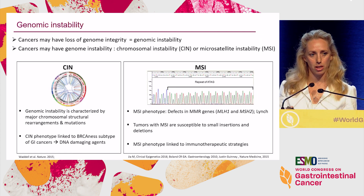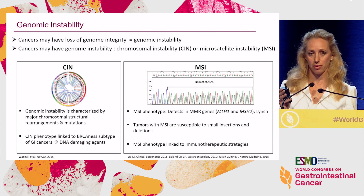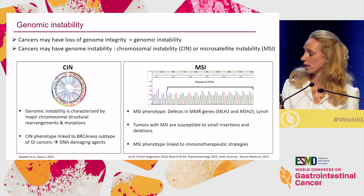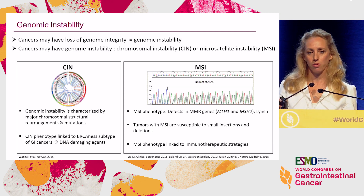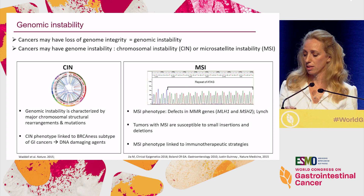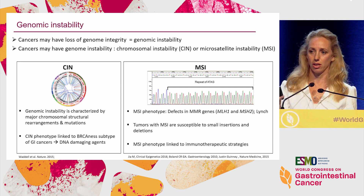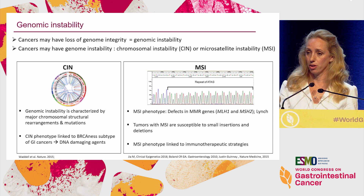What about genomic instability? Some cancer cells have loss of genome integrity. There are two main ways this can happen: one is chromosomal instability, characterized by major chromosomal and structural rearrangements and mutations. For some tumors — for example, pancreatic cancer — when we see this kind of genome, it's more likely to be linked to a BRCA-ness phenotype, with an aggregation of alterations in germline or somatic BRCA or BRCA-like pathway genes.